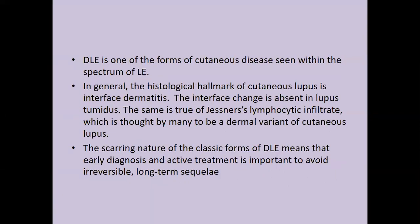DLE is one of the forms of cutaneous disease seen within the spectrum of LE. The histological hallmark of cutaneous lupus is interface dermatitis. Interface changes are absent in lupus tumidus, and the same is true of Jessner's lymphocytic infiltrate, which is many times considered a dermal variant of cutaneous lupus erythematosus. The scarring nature of classical DLE means that early diagnosis and active treatment are important to avoid irreversible long-term sequelae.